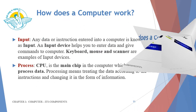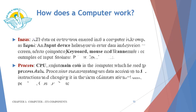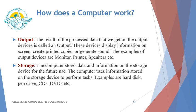Now let us understand the term input. Any data or instruction entered into a computer is known as input. An input device helps you to enter data and give commands to the computer. Keyboard, mouse, and scanner are examples of input devices. The next term is process — CPU is the main chip in the computer which is used to process data. Processing means treating the data according to the instructions and changing it into the form of information. What is output? The result of the processed data that we get on the output devices is called output. These devices display information on screen, create printed copies, or generate sound. Examples of output devices are monitor, printer, speakers, etc.